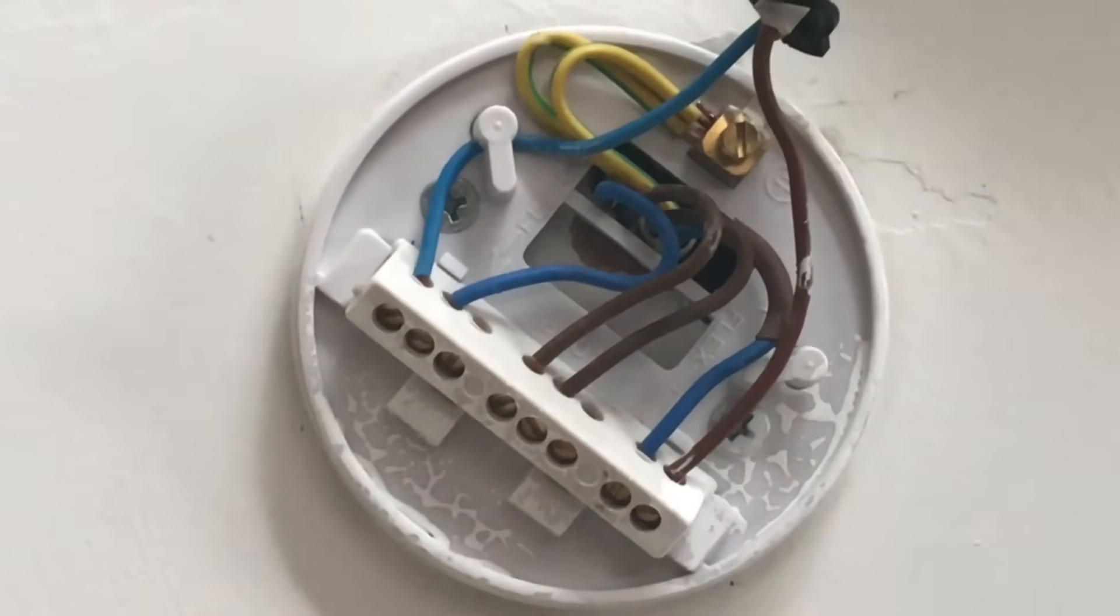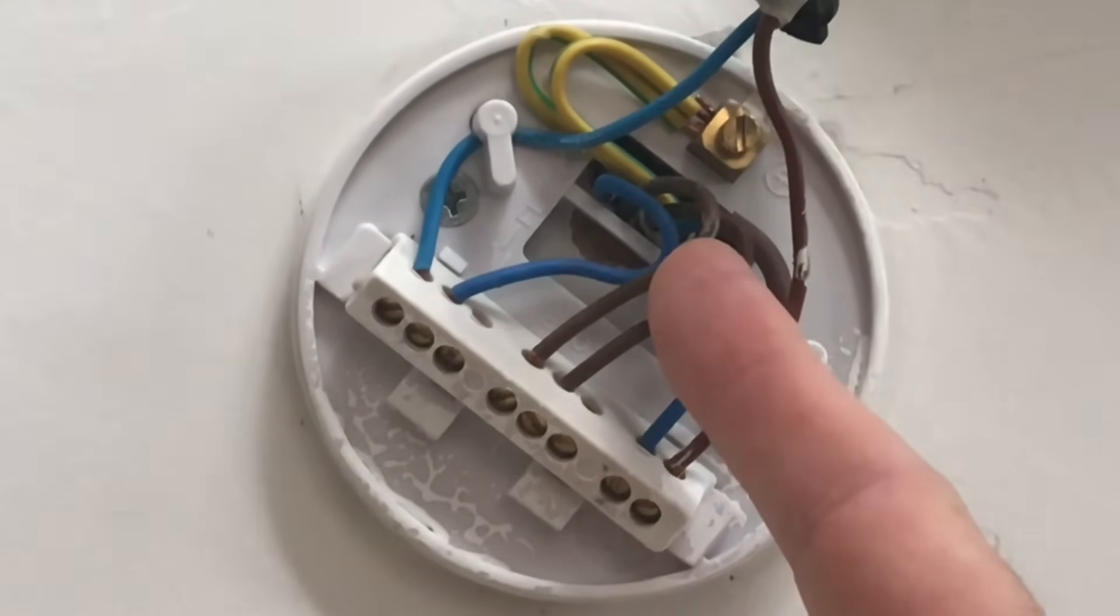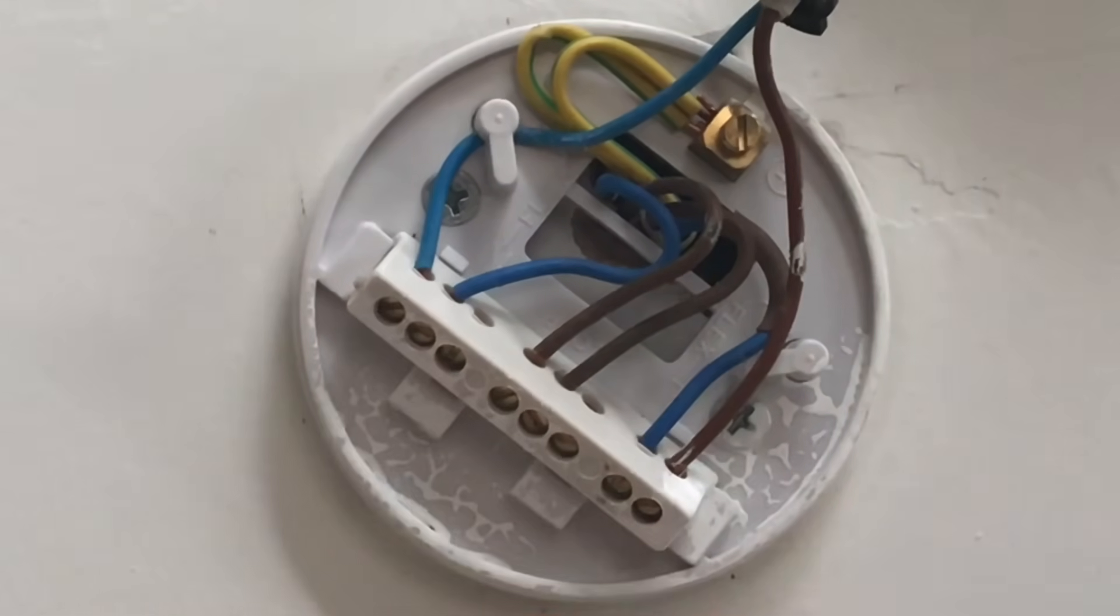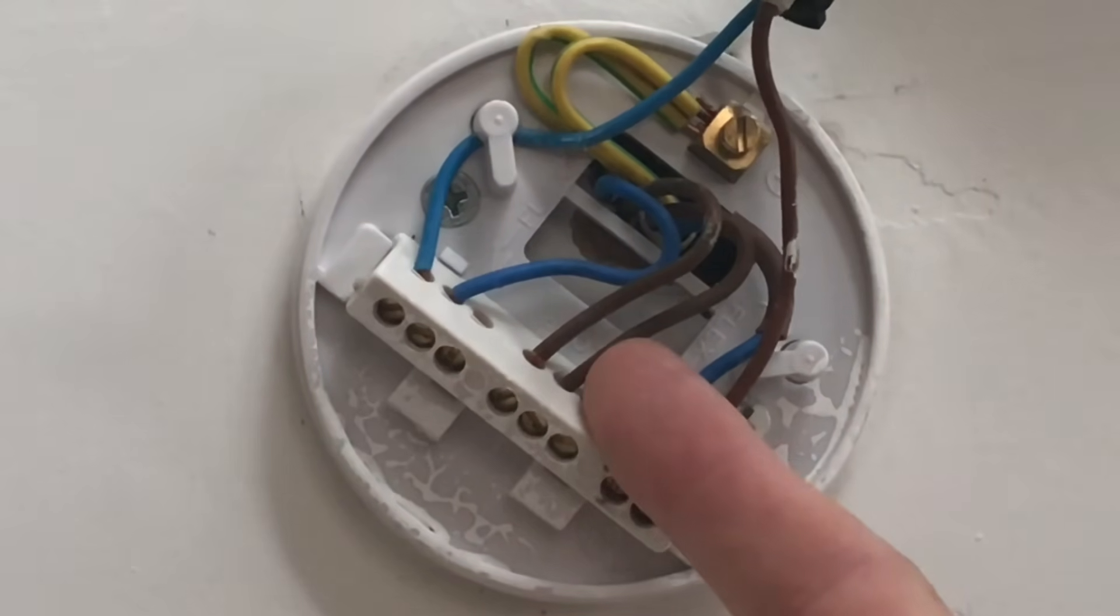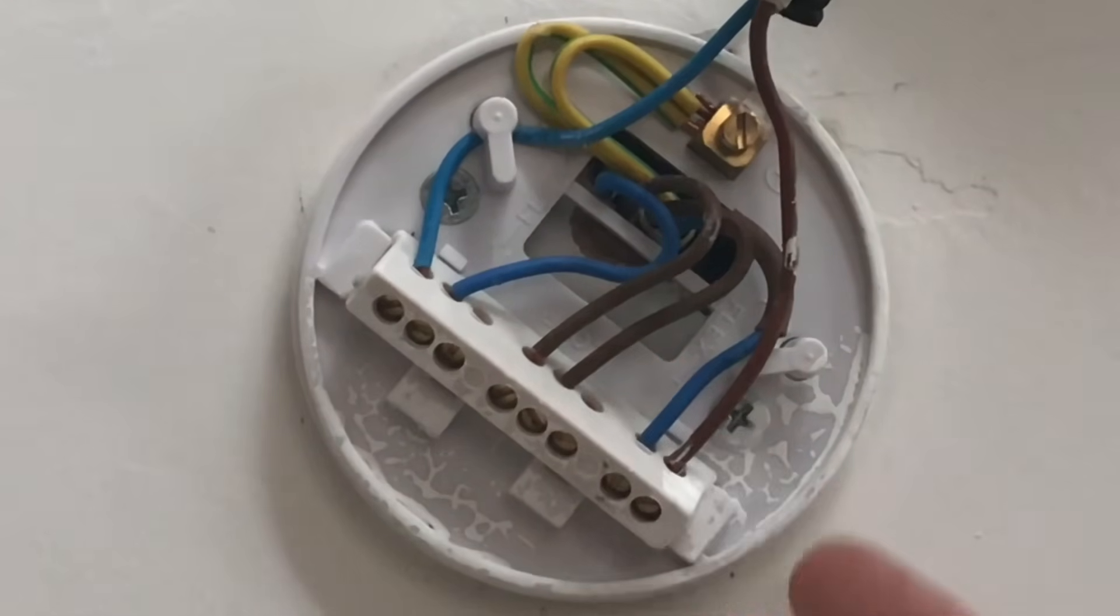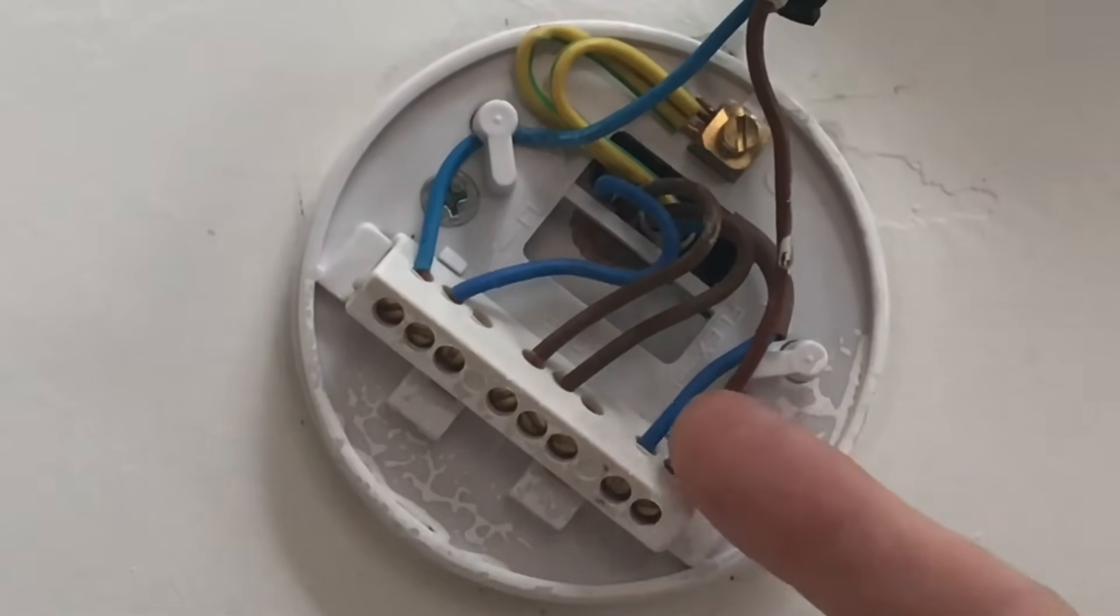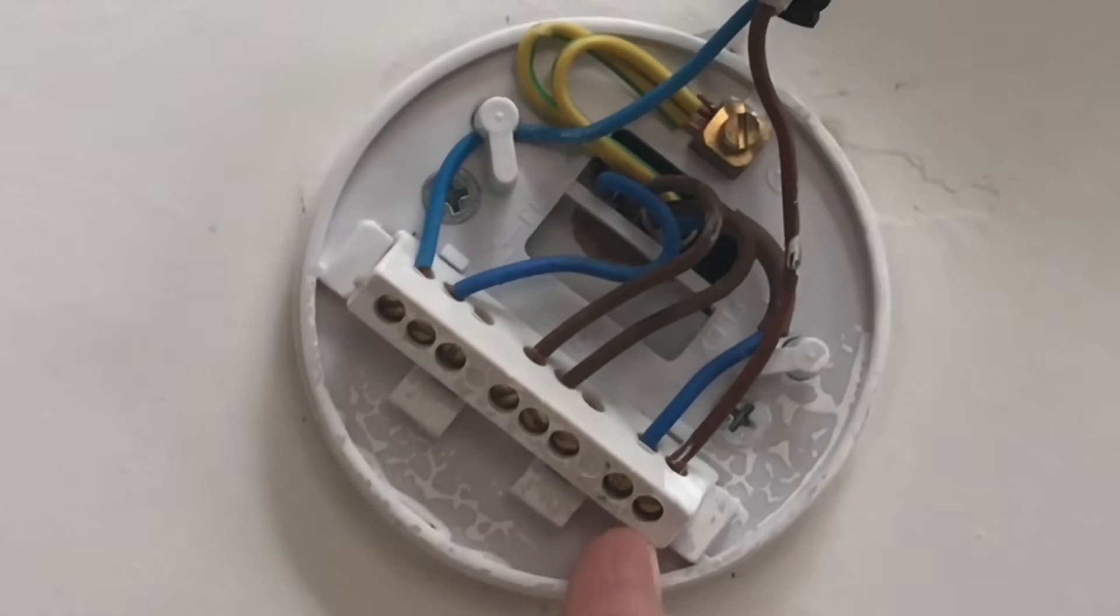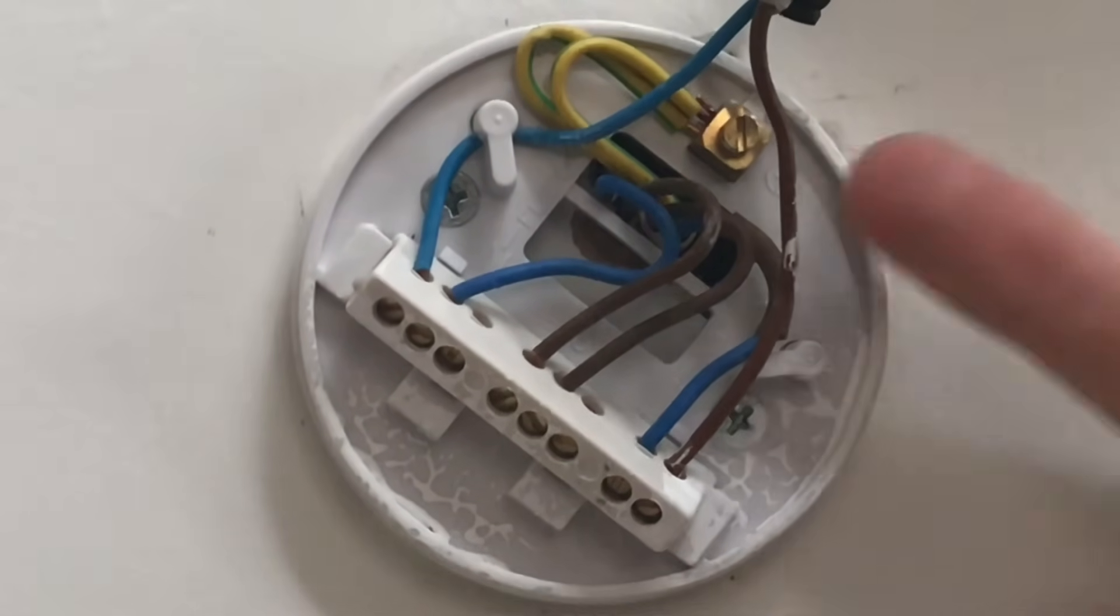So the supply comes in, permanent line comes into loop along with a neutral to the neutral block. A permanent line goes down to the switch and returns on not a neutral connection. It is blue but identified with brown sleeving and it's a switching line conductor and it's connected in the switching line connection here. The two CPCs are both secured within the earth terminal in case it's changed for an exposed conductive part.